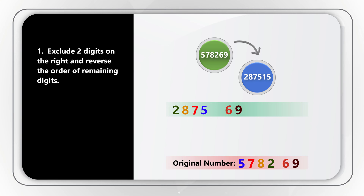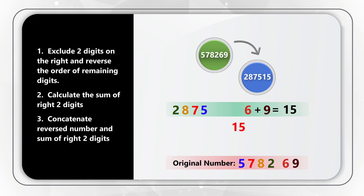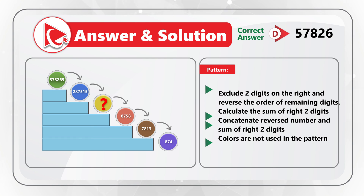The calculations are very simple: we add 6 plus 9, and the result is 15. Then we concatenate 2875 and 15, so the resulting number is 287515. As the ball continues rolling, we repeat the calculations and get to the answer of choice D, 57826.